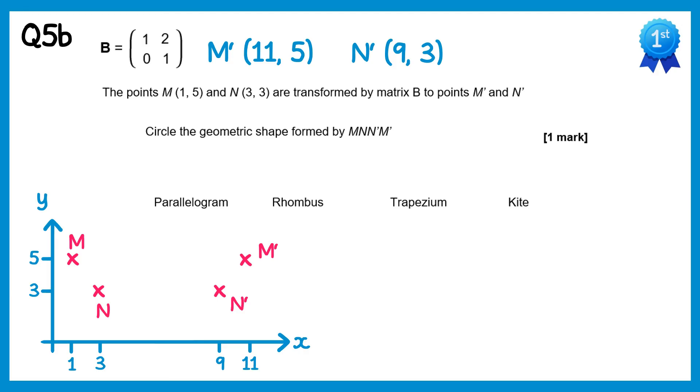Now you can see from the coordinates here that M and M dash, and N and N dash, lie on the same horizontal line, therefore they're parallel. The other two lines though are clearly not parallel, so the shape we've got here has one pair of parallel sides, and that's a trapezium.